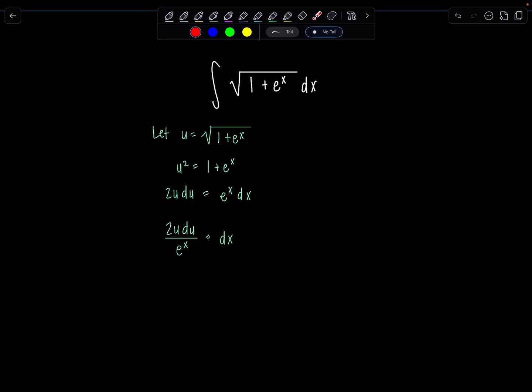What can I do so I can rewrite e to the x in terms of u? Just come back right here, solve for e to the x. And we can see e to the x is equal to u squared minus 1.